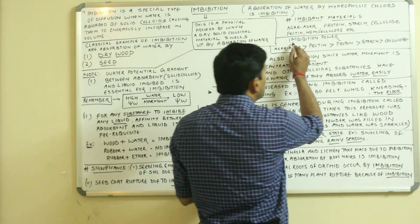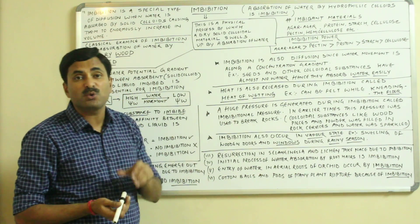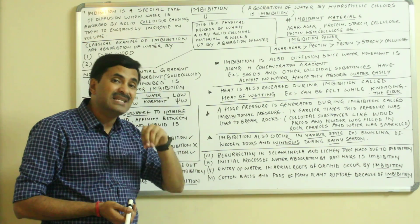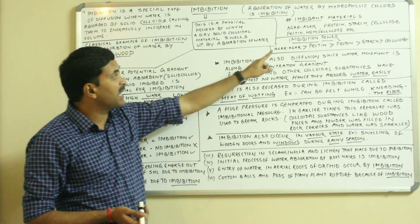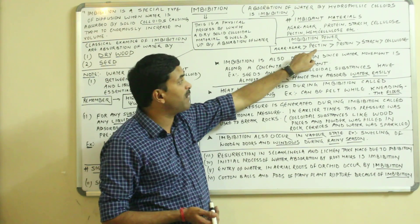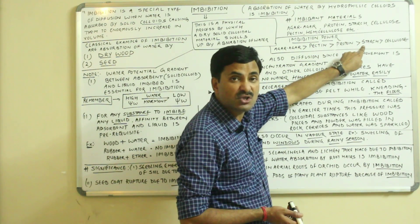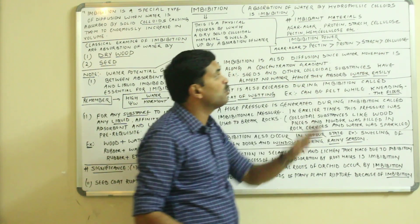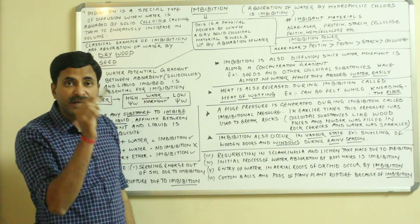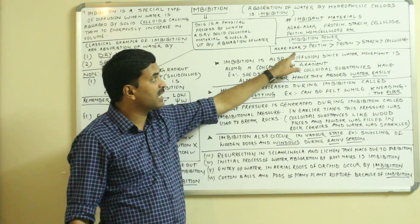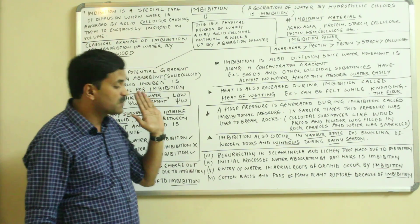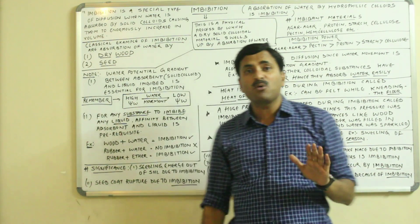Now, what is imbibition power? Which substances show the greatest and which show the least imbibition power? Agar agar has more imbibition power than pectin; pectin has more than protein; protein has more than starch; and starch has more imbibition power than cellulose. So the greatest imbibition power is found in agar agar and the least is found in cellulose.